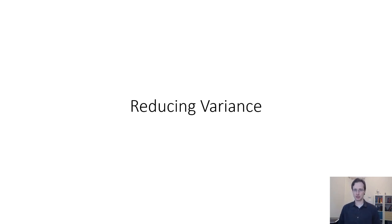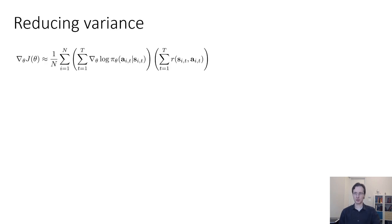In the next portion of today's lecture, we're going to talk about how we can modify the policy gradient calculation to reduce its variance, and in this way actually obtain a version of the policy gradient that can be used as a practical reinforcement learning algorithm. The first trick we'll start with is going to exploit a property that is always true in our universe, which is causality.